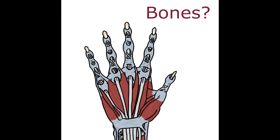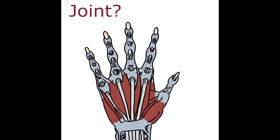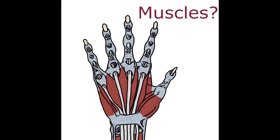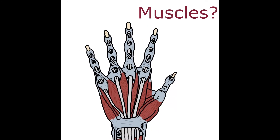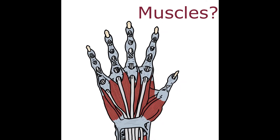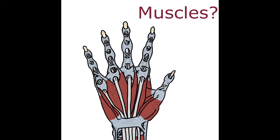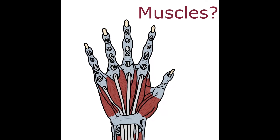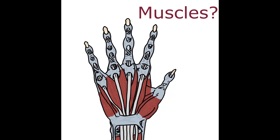Let's revise. Bones: carpals, metacarpals, phalanges. Joint: radiocarpal. Muscles: extrinsic and intrinsic. For intrinsic — thenar and hypothenar. For thenar, related to the thumb: abductor pollicis brevis, flexor pollicis brevis, and opponens pollicis. For hypothenar — abductor digiti minimi, flexor digiti minimi brevis, and opponens digiti minimi. Then palmaris brevis, adductor pollicis, and for all digits: the lumbricals and the interossei — dorsal and palmar.